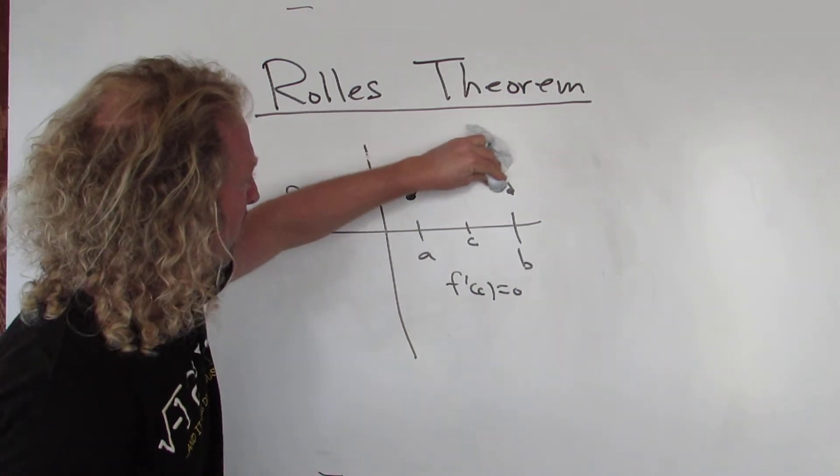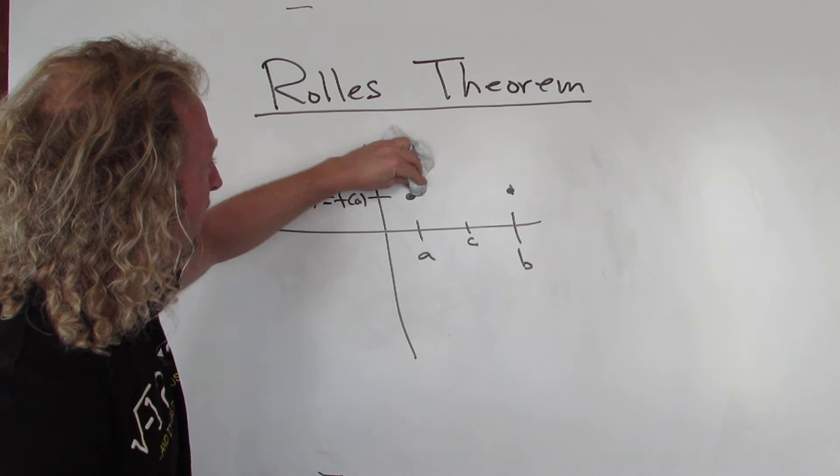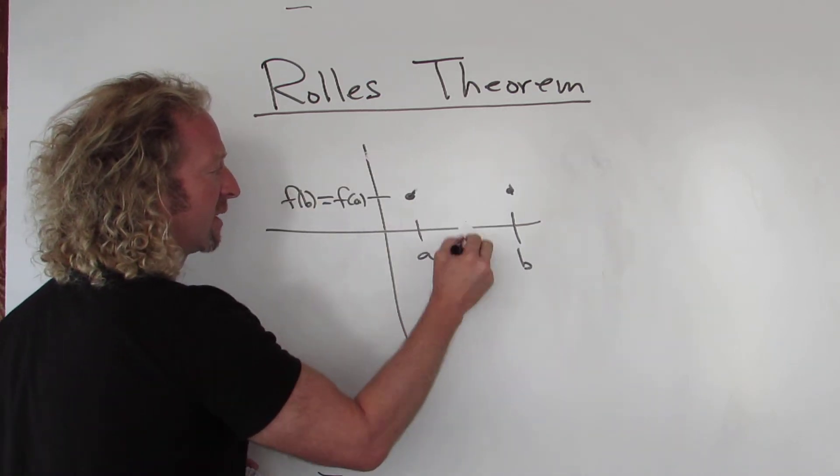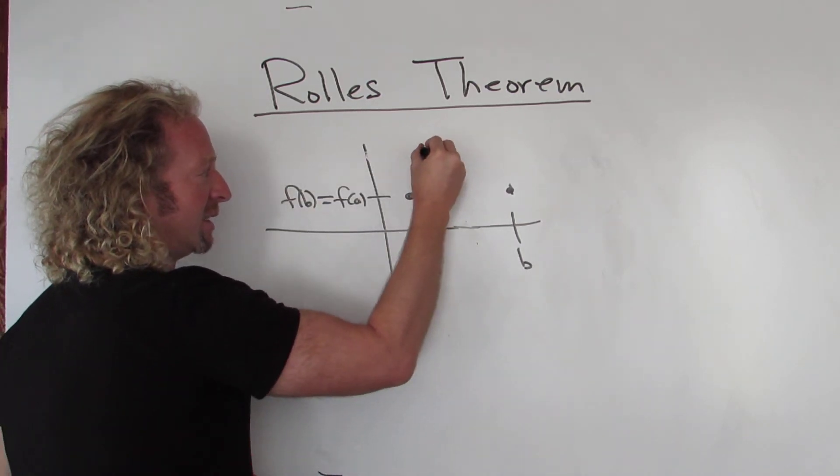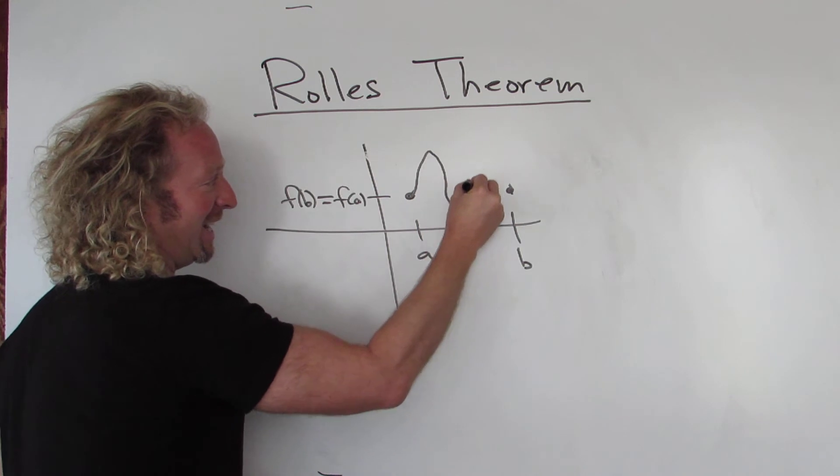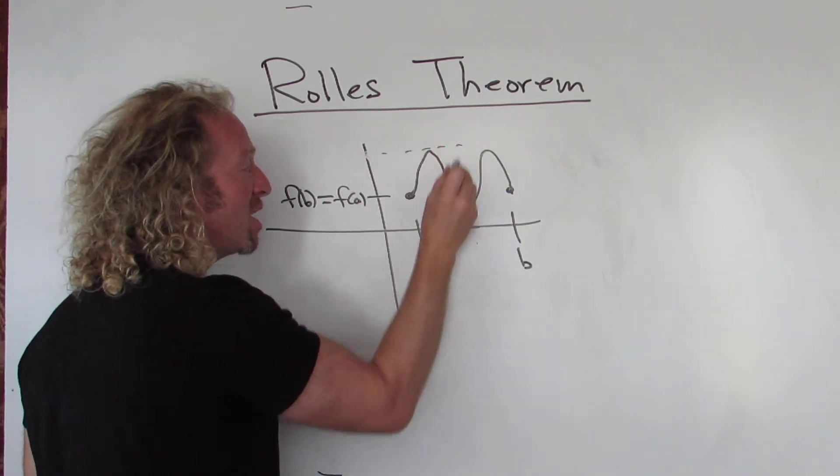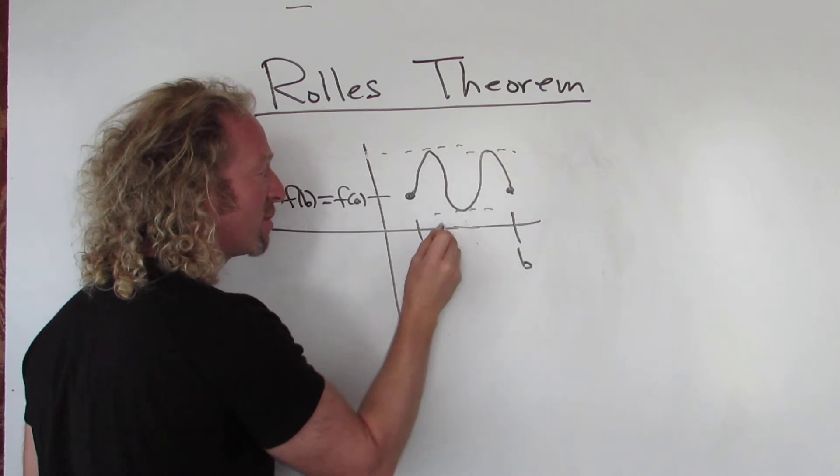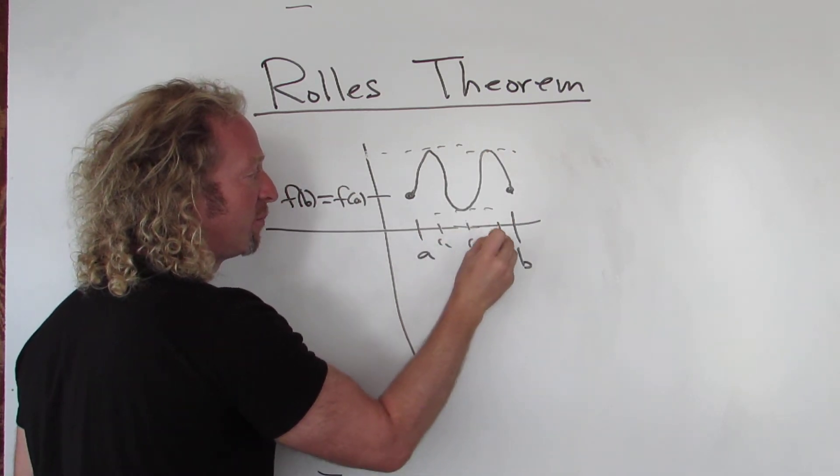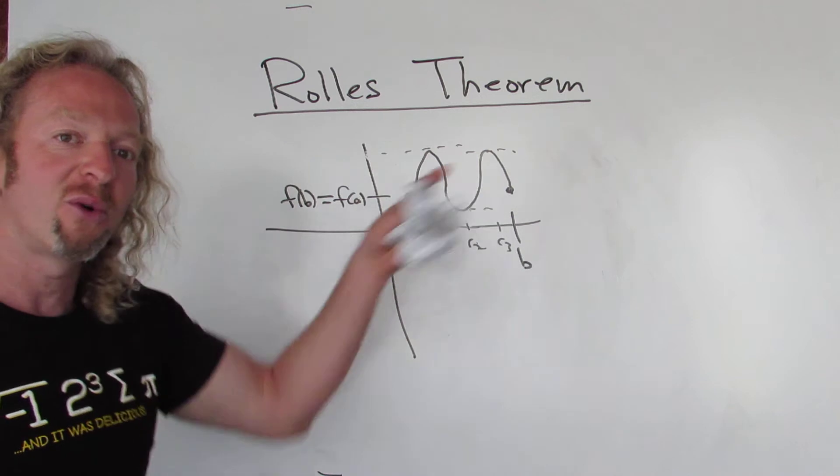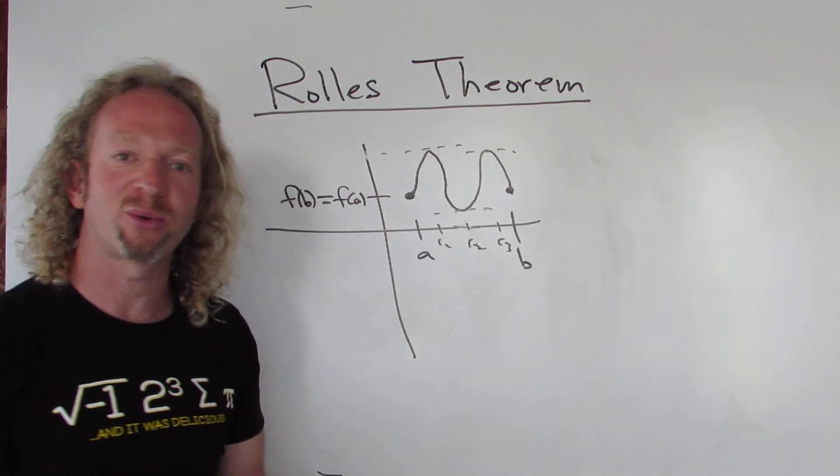Let's try to break it. What if we do something like this? I got to get to b. All right, okay, even worse. Now there are three numbers, right? There's three numbers. Call it c1, c2, c3. There are three numbers where the derivative is 0. So we weren't able to break Rolle's Theorem.